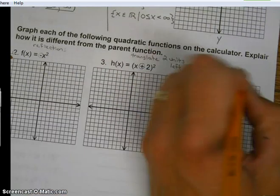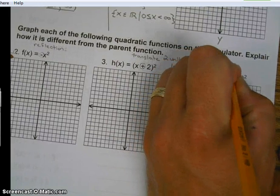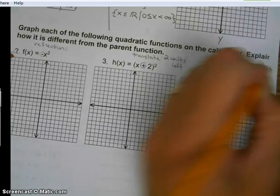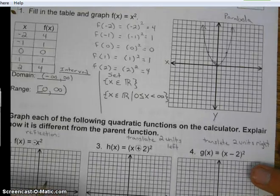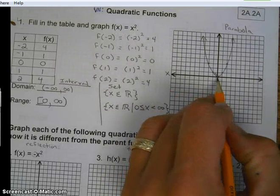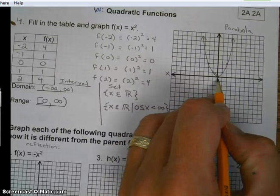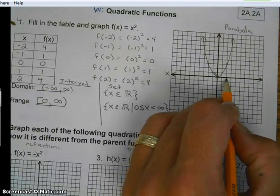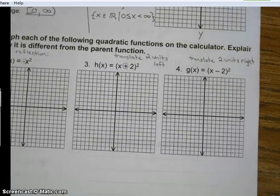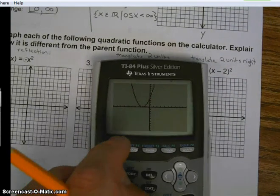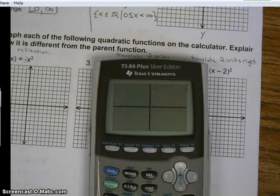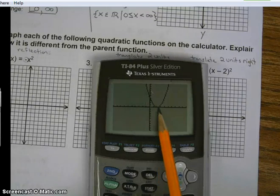This one's going to translate the parent two units right. So just imagine this now. Imagine your parent translating. And remember, translating, the layman's term for translating is slide. Slides two units to the right. So it's going to go one, two. And all the other points are going to follow. So let's look at that real quick. I want to go two to the right. So put the minus in there. Graph it. And there you go. It shifted two units to the right. We're doing good. Turn the page.